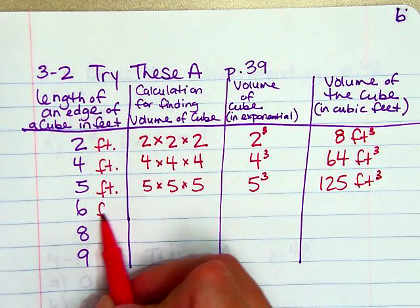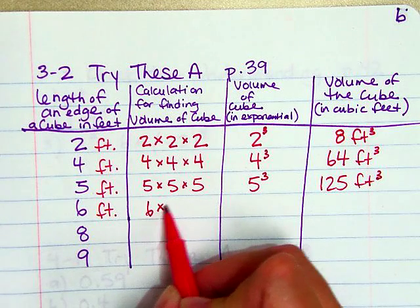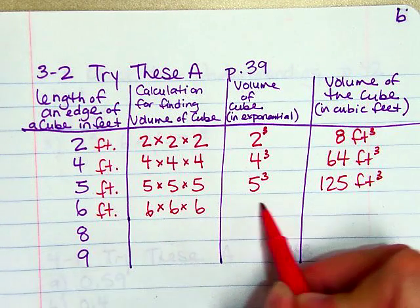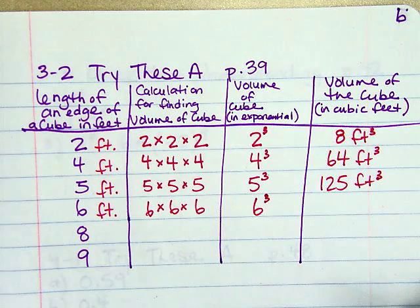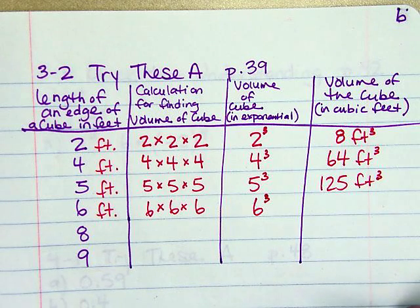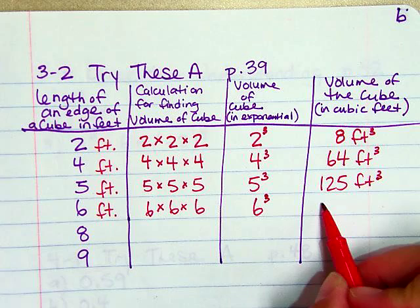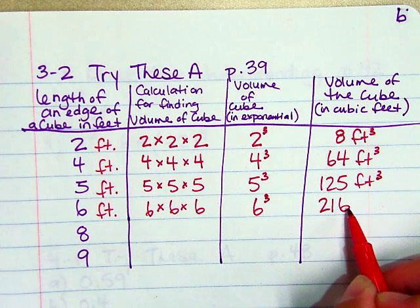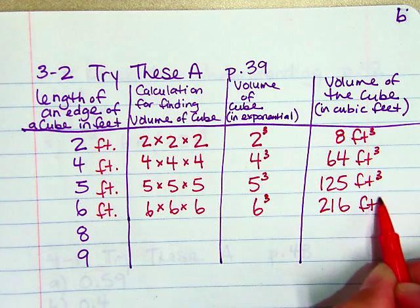And now what if the edge was 6? So length times width times height or 6 cubed because the edge of cubes are all the same. So if I cube that in my calculator I get 216. Hopefully we're memorizing some of these.